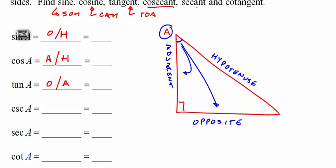Now, cosecant, secant, cotangent match up with sine, cosine, and tangent.